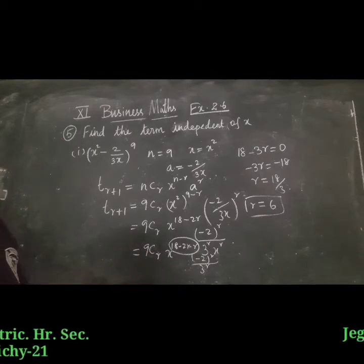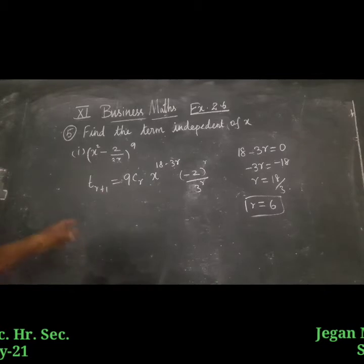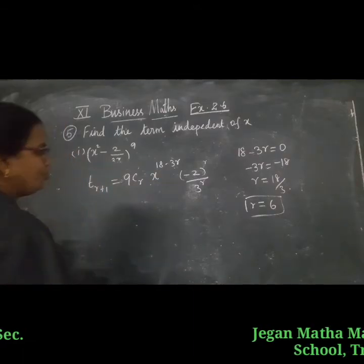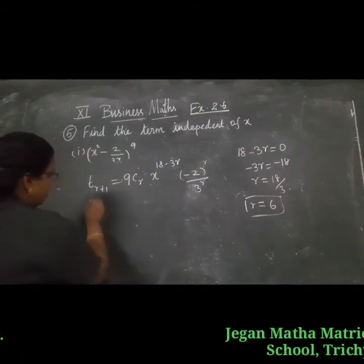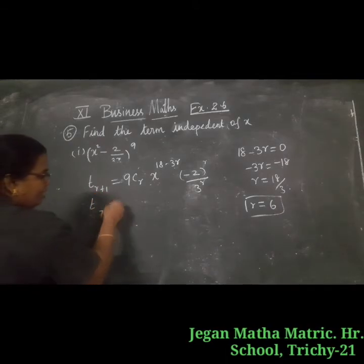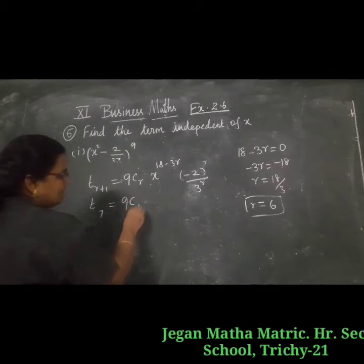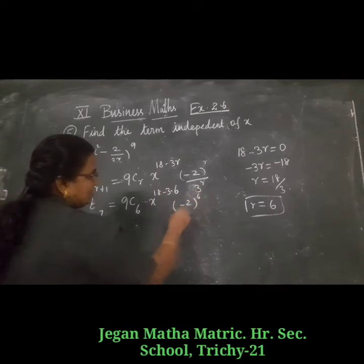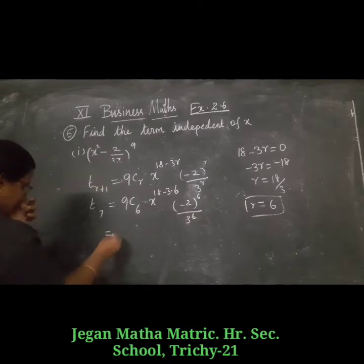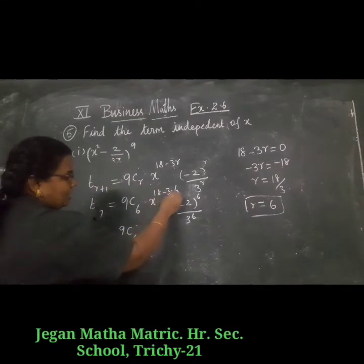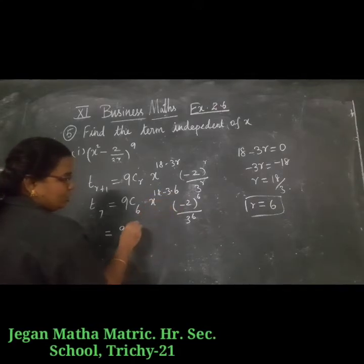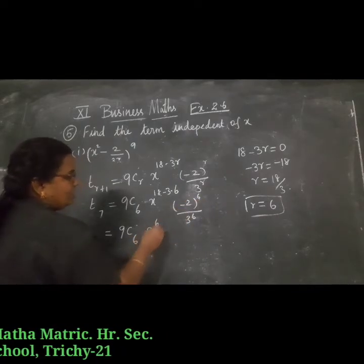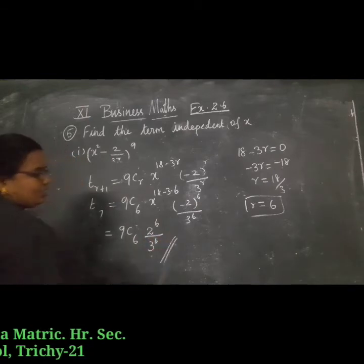Now, r is equal to 6, and we substitute in the general term equation. t(r+1) equals 9Cr times x power 2n minus 3r times minus 2 power r divided by 3 power r. Substituting r equals 6: t7 equals 9C6 times x power 18 minus 18, and minus 2 to the power 6 divided by 3 to the power 6. Simplifying: 18 minus 18 equals 0, so x power 0 equals 1, and since power 6 is even, minus becomes plus. The answer is 9C6 times 2 power 6 divided by 3 power 6.